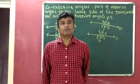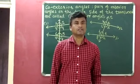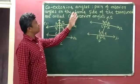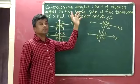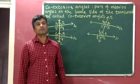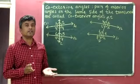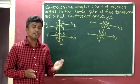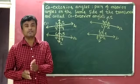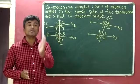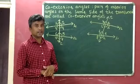Good morning students. Today we will discuss co-exterior angles. The definition of co-exterior angles is: a pair of exterior angles on the same side of the transversal are called co-exterior angles. Co-exterior angles means they are exterior angles and they lie on the same side of the transversal.